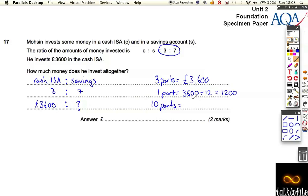Let's put it all back together. If one part is £1200, then 10 parts is going to be £12,000 altogether. So how much does he invest altogether? £12,000. Done.